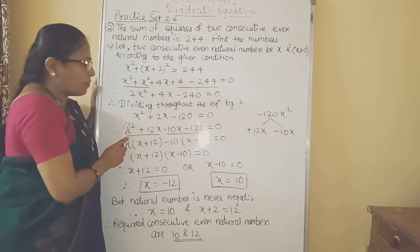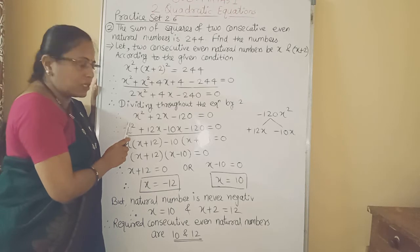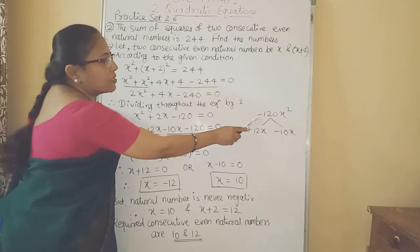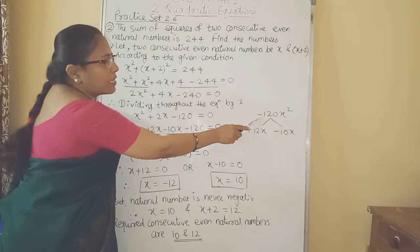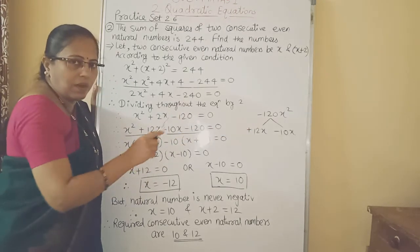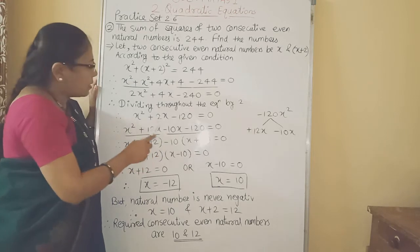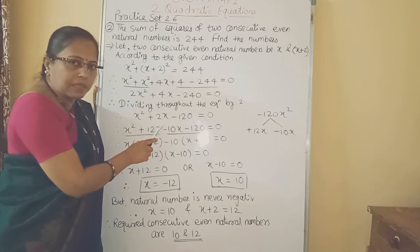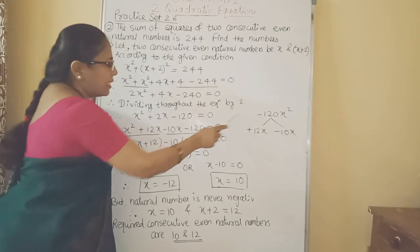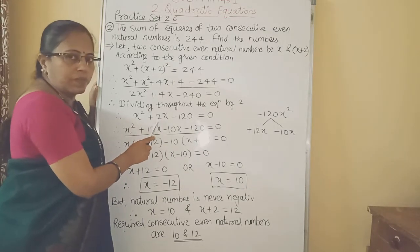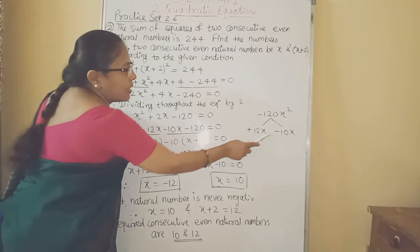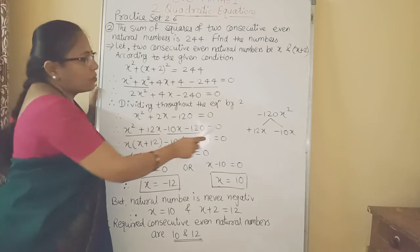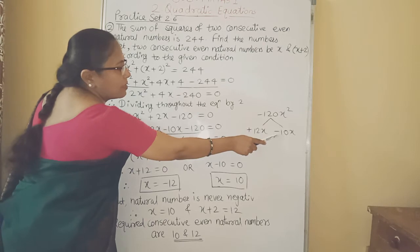Now we got the simple quadratic equation in standard form. Now we go for factorization. The product of first term and third term is minus 120x square. Again the product is negative that means one factor is positive other one is negative. That means the middle term is the subtraction of that two factors. Means we require two factors such a way that its product is 120 and subtraction is 2. So that factors are 12x and 10x. Middle term is having sign plus. So here the greater number is plus and the second factor is minus.